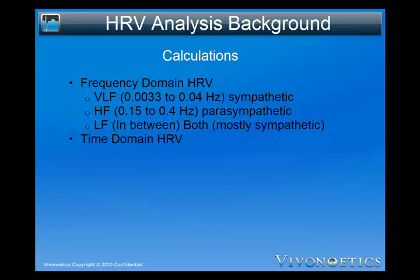Several other commonly used HRV indices are based on statistics of the beat-to-beat variability. These are known as time domain indices. Like frequency domain indices, these may be used to quantify the balance between sympathetic and parasympathetic activity. A natural cycle of heart rate variation exists that occurs through the influence of breathing on the flow of sympathetic and vagus impulses to the sinoatrial node. This cycle is termed respiratory sinus arrhythmia. The rhythm of the heart is primarily under the control of the vagus nerve, which inhibits heart rate and the force of contraction.